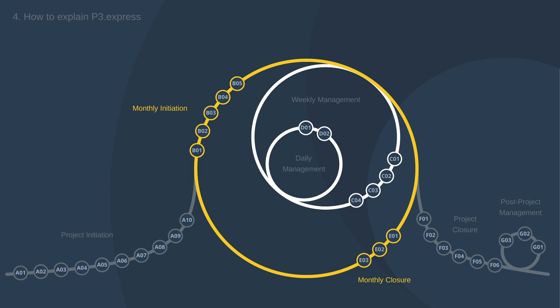The big outer cycle is monthly — we manage a P3 Express project one month at a time, which from a Prince2 perspective is exactly managed by stages. The difference is that in Prince2 stages can have any duration and don't need to be fixed. Monthly cycles make sense for most projects because they organically have elements that repeat every month. Inside the month, activities are mainly time-driven — happening every week or every day — forming the other two cycles.